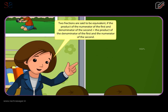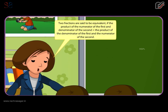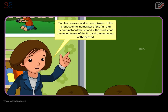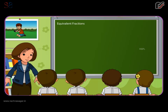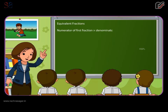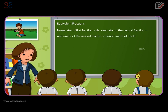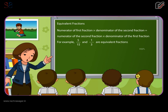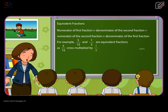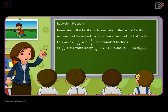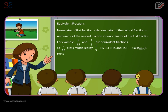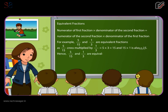Equivalent fractions. Two fractions are said to be equivalent if the product of the numerator of the first and the denominator of the second is equal to the product of the denominator of the first and the numerator of the second. For example, five by fifteen and one by three are equivalent fractions, as five by fifteen cross multiplied by one by three gives five into three equals fifteen, and fifteen into one also equals fifteen. Hence, five by fifteen and one by three are equivalent fractions.